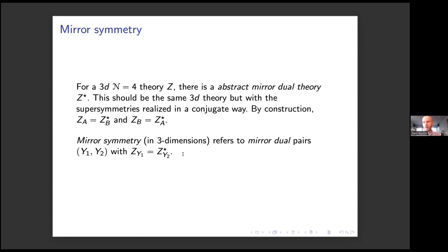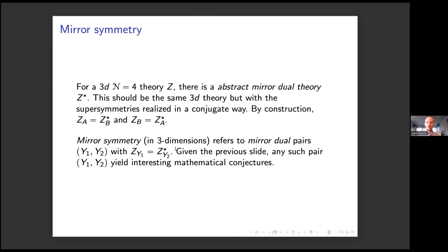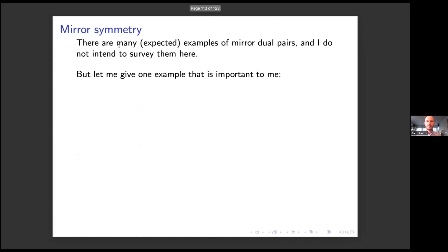Whenever you have a putative mirror dual pair Y1 and Y2, this gives you a bunch of interesting mathematical conjectures. I don't want to survey mirror dual pairs here — there are a ton of them. They're very typically non-abelian in nature, but I'll give one example which is important for this talk, which is when Y1 is equal to the affine line A1, or the complex numbers if you want, and Y2 is going to be the affine line mod Gm. This is a kind of stack quotient — non-separated and encoding the action of Gm on A1.